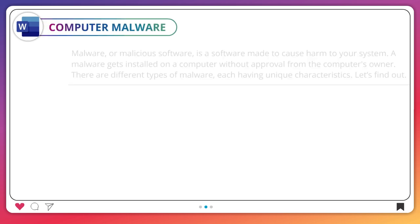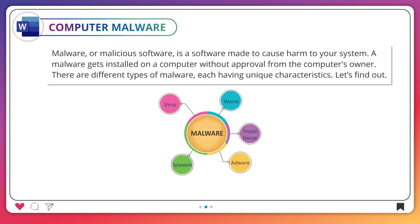Computer Malware. Malware, or malicious software, is a software made to cause harm to your system. A malware gets installed on a computer without approval from the computer's owner. There are different types of malware, each having unique characteristics. Let's find out.